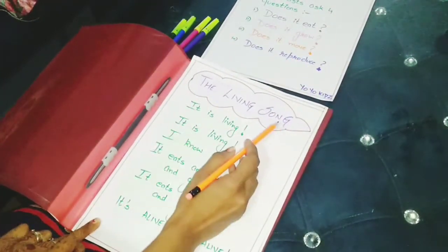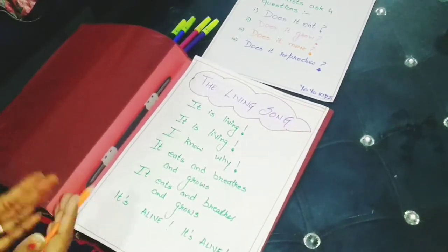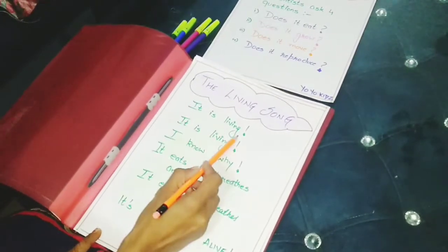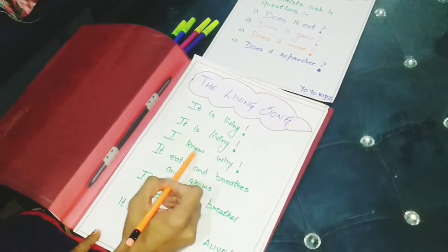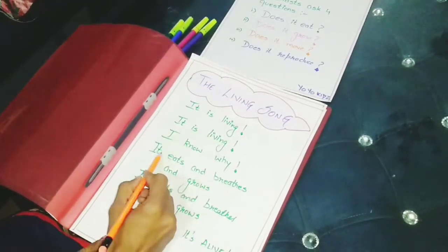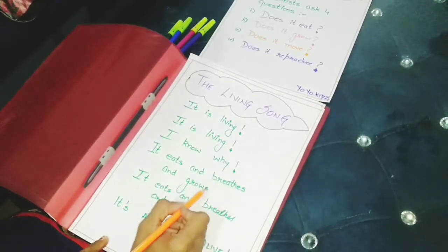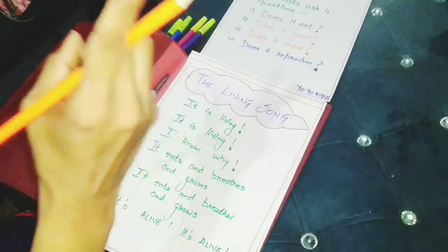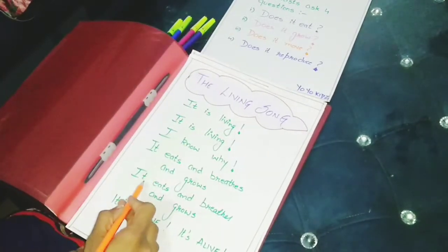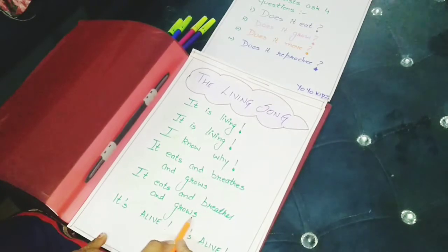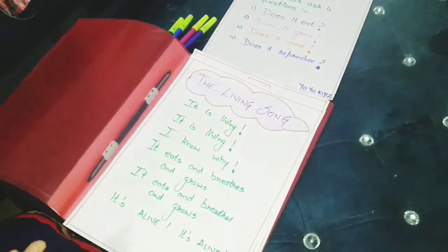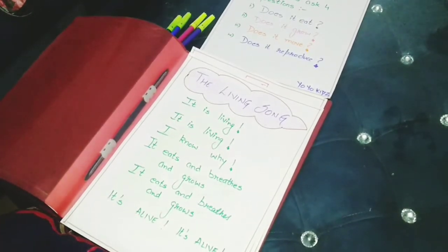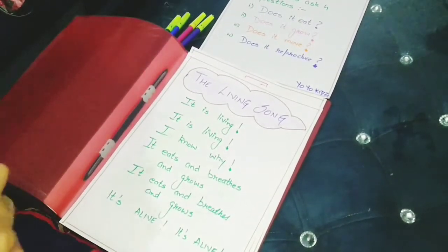Now this is a living rhyme. If something is living, here is a rhyme that you can teach to children. It is living, it is living, I know why. It eats, breathes and grows. There are three characteristics. It eats, breathes and grows. It is alive, it is alive. It means it is a living thing if it can eat, if it can breathe, and if it can grow.